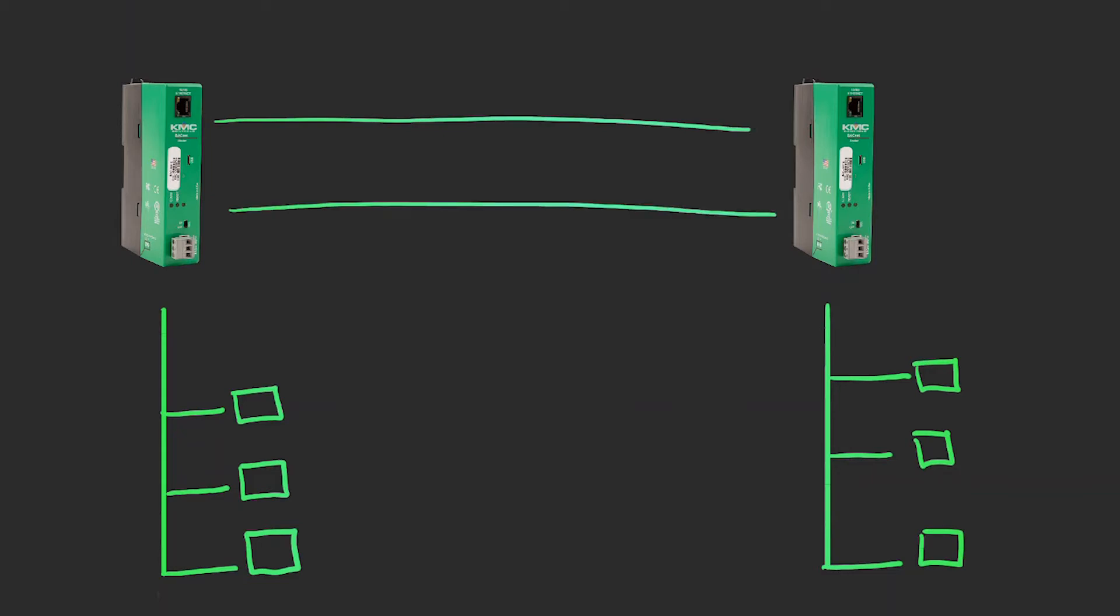A BBMD, or a BACnet broadcast management device, is a BACnet router that tunnels all broadcast messages it receives to all the other BBMDs and foreign devices it knows within your system.